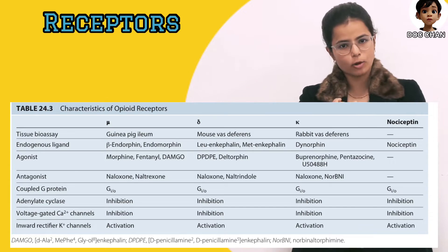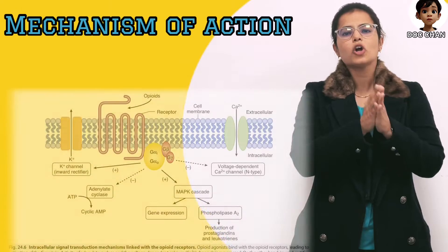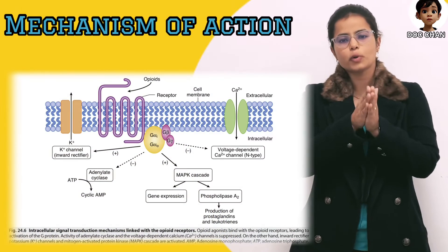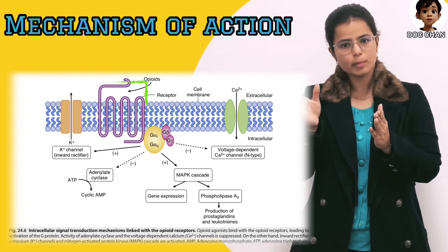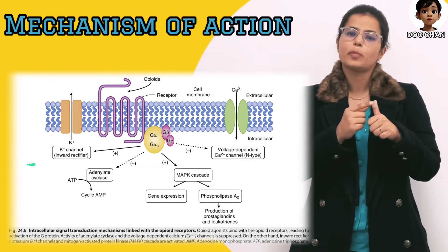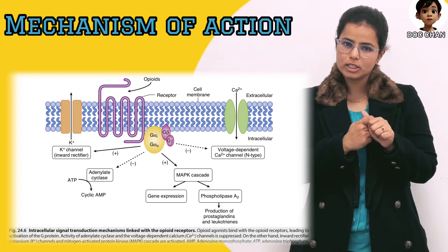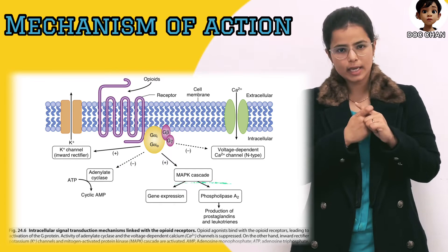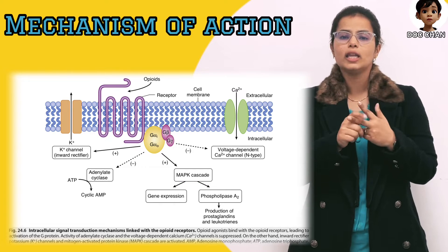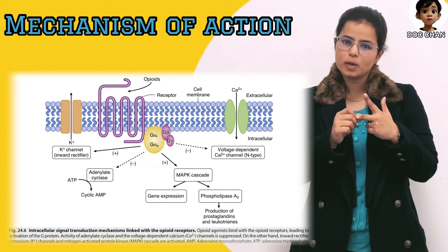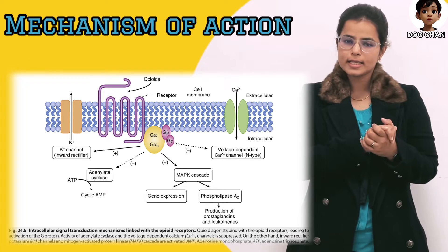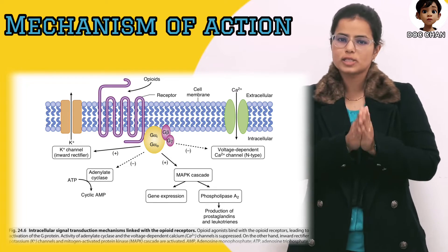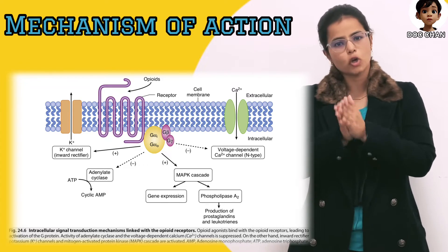Coming to mechanism of action, opioids act through G-protein coupled 7-transmembrane receptors, which activates potassium rectifying channels and MAPK cascades, and inhibits calcium channels and adenylyl cyclase. This adenylyl cyclase is also responsible for tolerance.